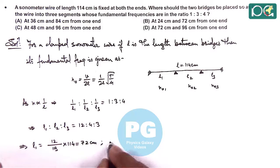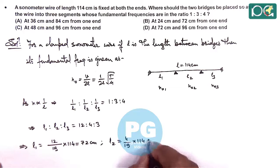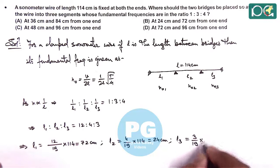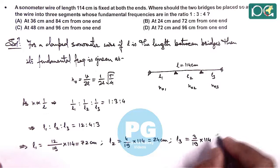Similarly, L₂ is 4/19 multiplied by 114, which gives 24 centimeters. And L₃ is 3/19 multiplied by 114, which is 18 centimeters.